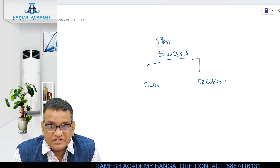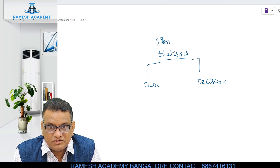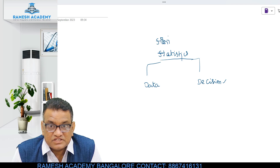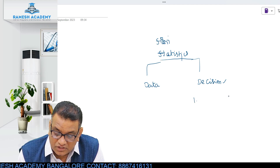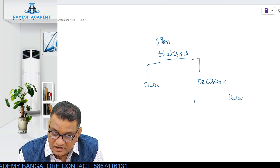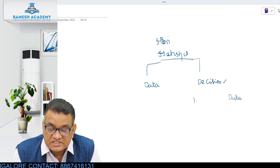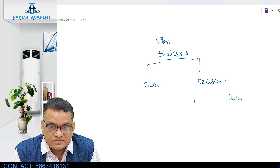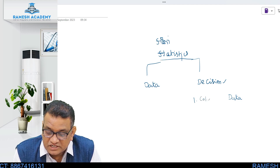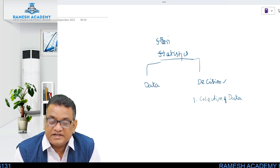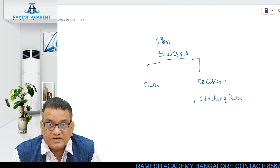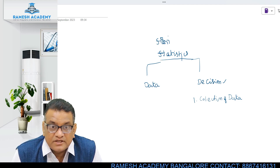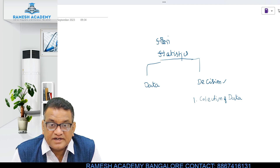For making any decision, raw material is required. For example, if you are planning to go to a movie this evening, you should first know the list of movies available in your city. Whenever you try to make a decision, data is the raw material. This data has to be collected, and the journey of statistics always starts with the collection of data. Without data, you will not be able to make any decisions.